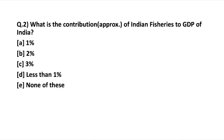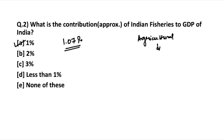The next question: what is the contribution of Indian fisheries to the GDP of India? Approximately 1.07% of the GDP is contributed by the Indian fisheries sector — so around 1%. If we look at the agricultural GDP, fisheries contribute around 5.15% to the total agricultural GDP.